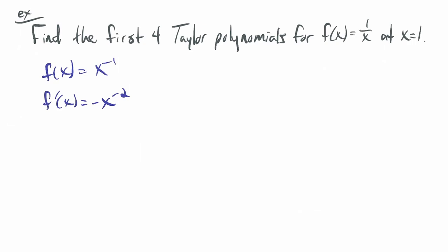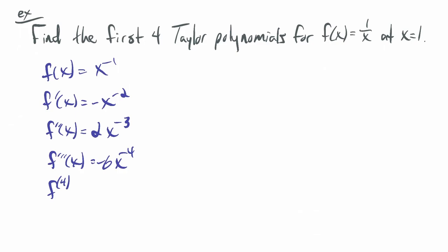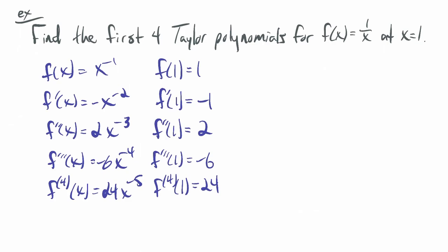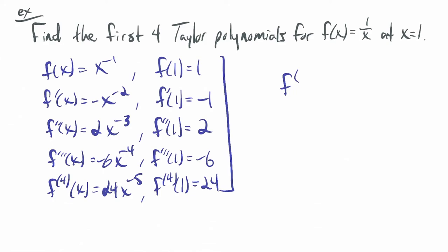The derivatives are: f prime of x equals negative x to the negative 2, f double prime of x equals 2 times x to the negative 3, f triple prime of x equals negative 6 times x to the negative 4, and the fourth derivative equals 24 x to the negative 5th. Now evaluating at 1: f of 1 equals 1, f prime of 1 equals negative 1, f double prime of 1 equals 2, f triple prime of 1 equals negative 6, and the fourth derivative at 1 equals 24.